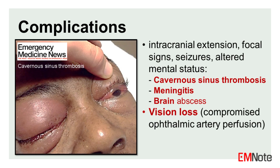Potential complications: If left untreated or inadequately managed, orbital cellulitis can progress to life-threatening complications, including cavernous sinus thrombosis, which can result in severe neurological deficits and mortality; meningitis; brain abscess, presenting with focal neurological signs, seizures, and altered mental status; and permanent vision loss due to elevated intraorbital pressure, which compromises ophthalmic artery perfusion.